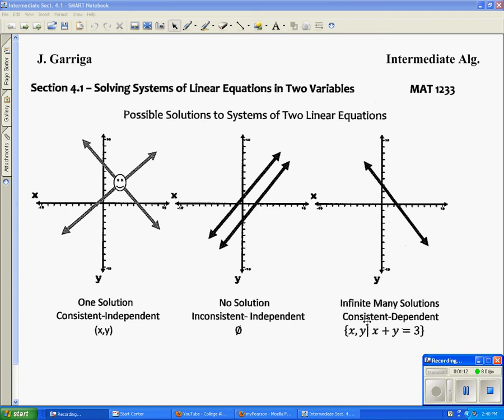They're consistent because they cross or touch, and they're dependent because they're right on top of each other. Sometimes the answer is given in this format, which is set builder notation.